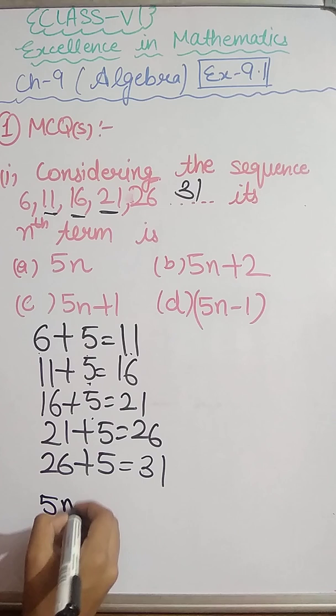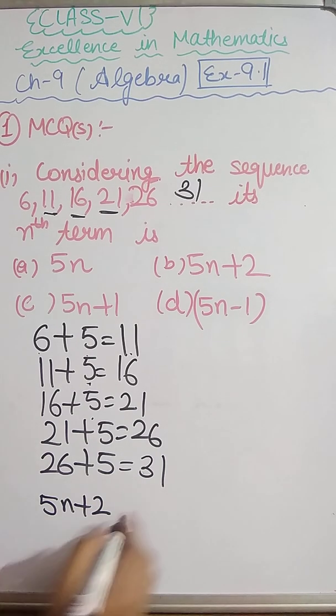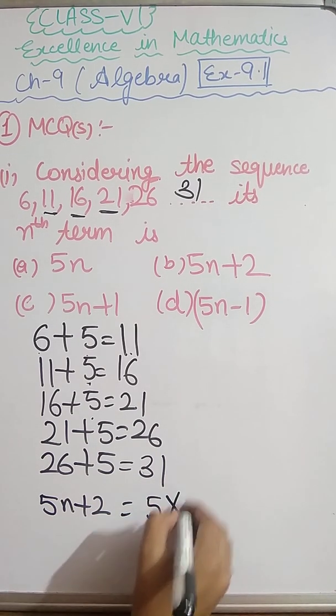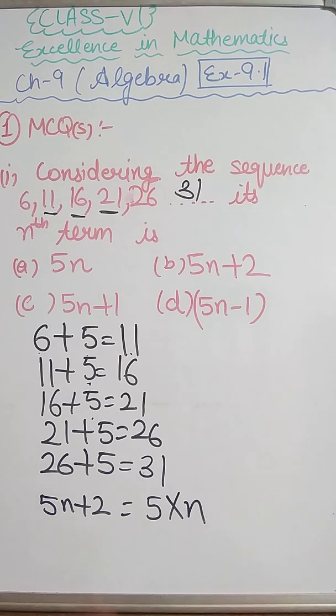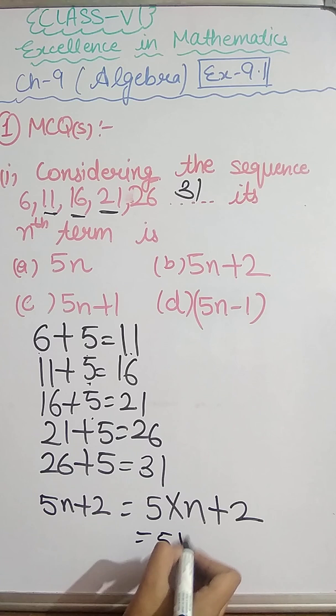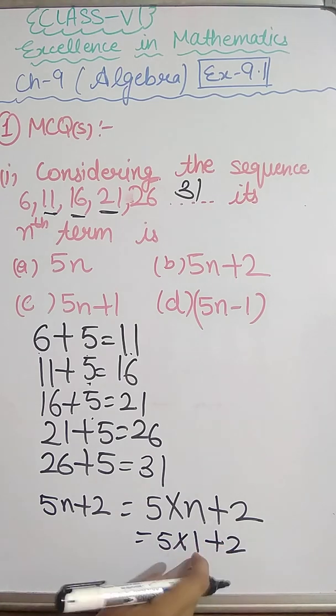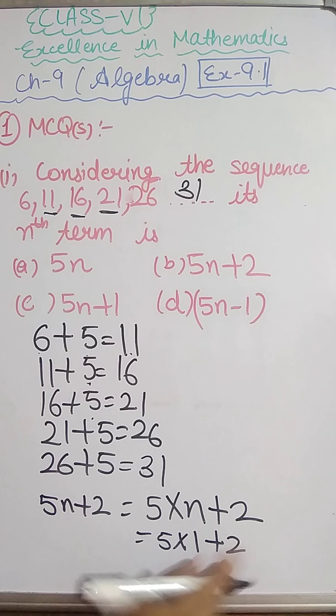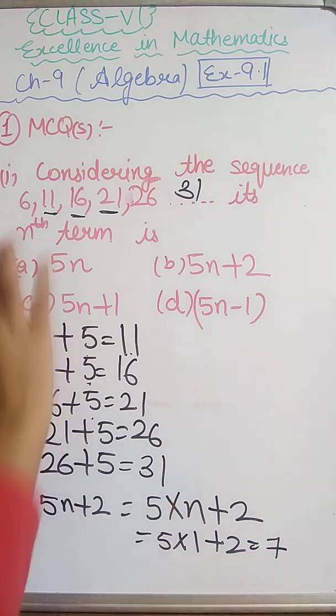Next we have 5n plus 2. It means 5 multiplied by n, and n can be any integer, plus 2. So if we multiply 5 by 1 plus 2, it is 7. So this is not going to be the sequence. This option is not going to be.